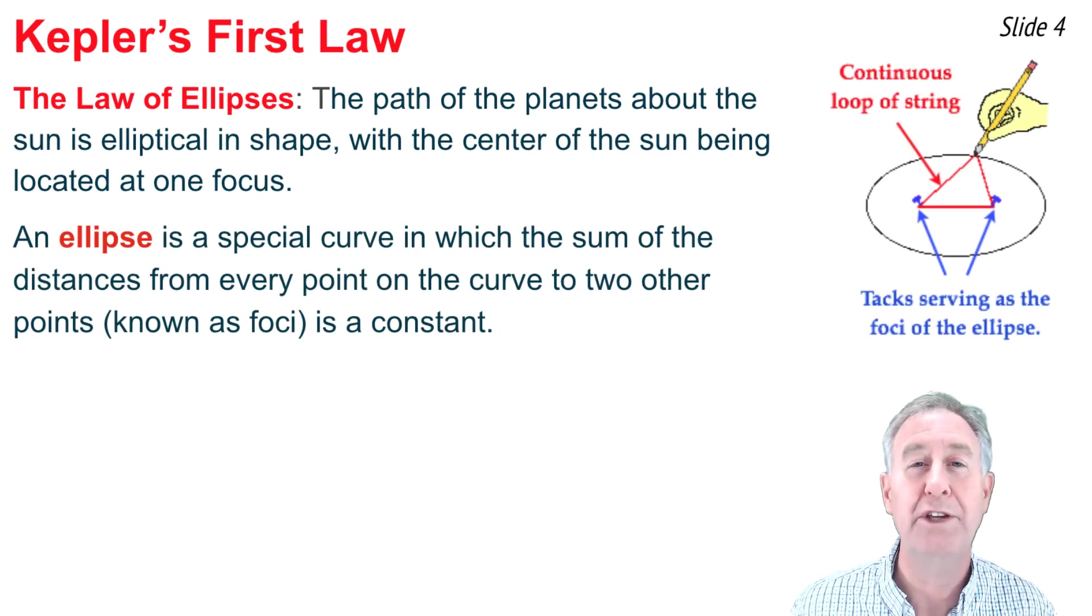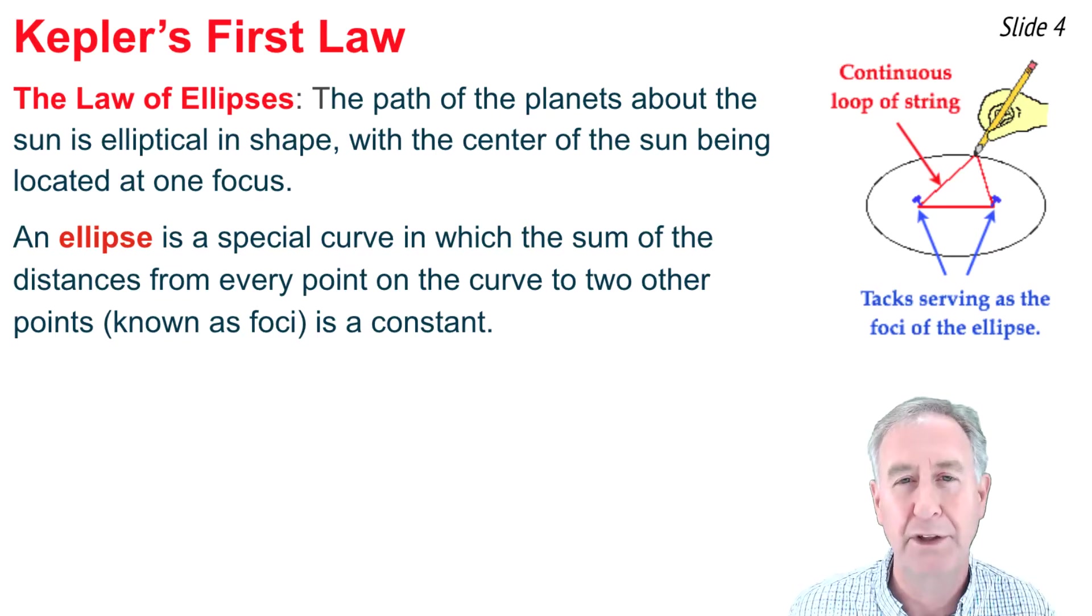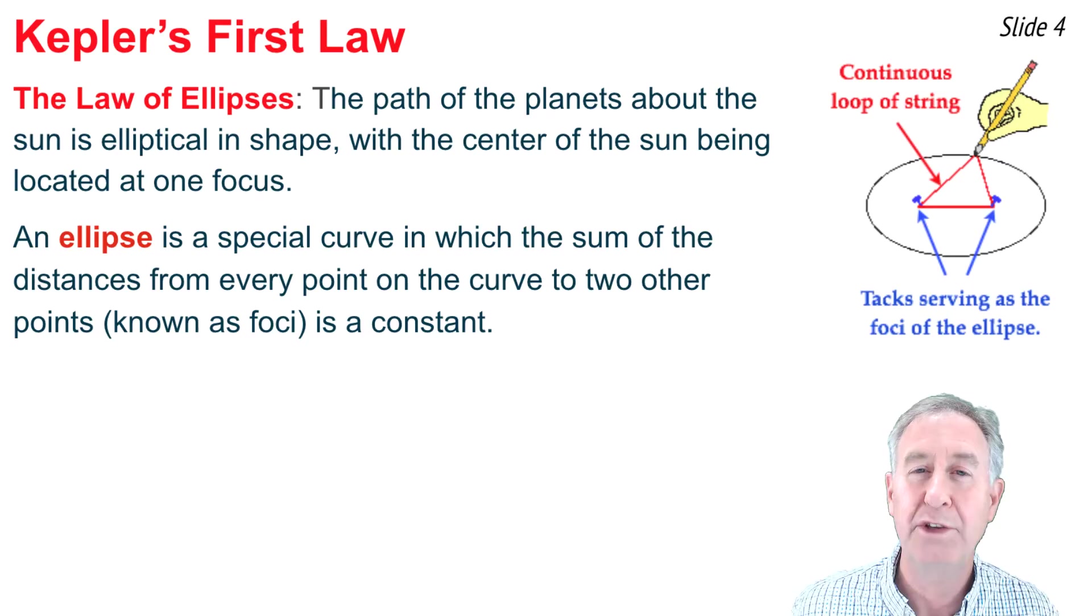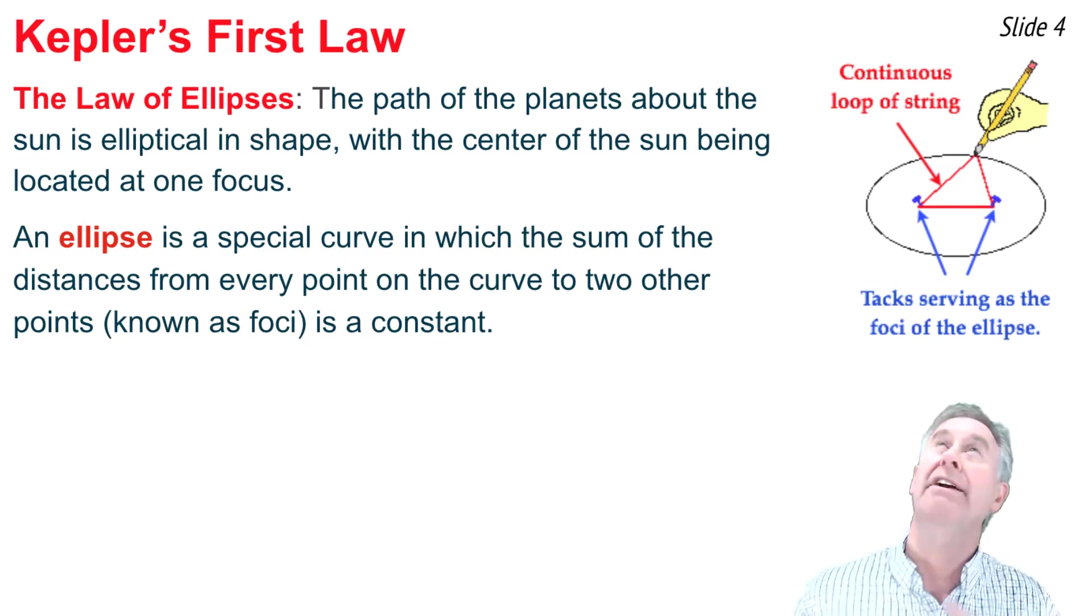To imagine an ellipse, suppose that you had a sheet of paper, a piece of cardboard, two tacks, a string that was tied into a loop, and a pencil. You take the tacks and use them to secure the paper to the cardboard. Then you take the string and place it around the tacks, and the pencil, you pull the string tight in order to form a triangle.